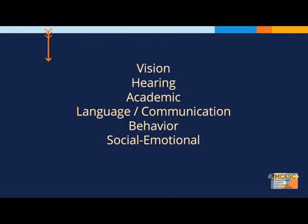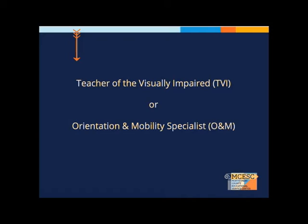including vision, hearing, academic, language, communication, behavior, and social-emotional. For example, we can provide consultation on whether or not a student's eye condition should be further explored through what is called a functional vision assessment to determine the student's ability to use vision to perform routine school tasks, or to discuss whether a student may need an orientation and mobility assessment to determine the student's ability to safely travel and navigate their school environment. Both our teacher of the visually impaired and our certified orientation and mobility specialists would be involved in this type of a request.